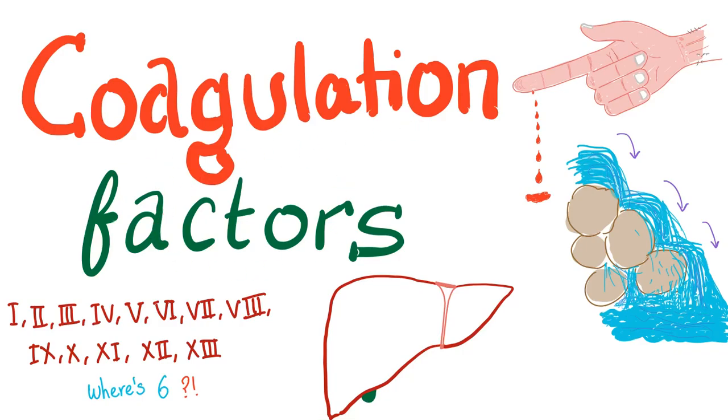Hey guys, it's Medicosis Perfectionist, where medicine makes perfect sense. We continue our bleeding and coagulation playlist. This is video number 96. We'll talk about the coagulation factors. We have how many? 12 factors. Oh, but the last one's 13. Yeah, but factor 6 does not exist because they later realized that factor 6 has nothing to do with coagulation whatsoever. So let's get started.